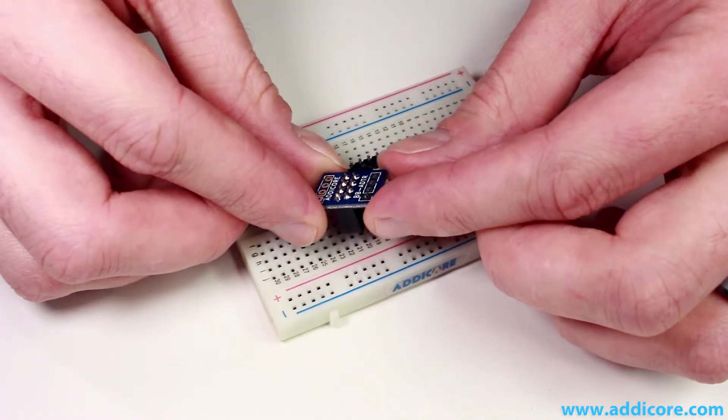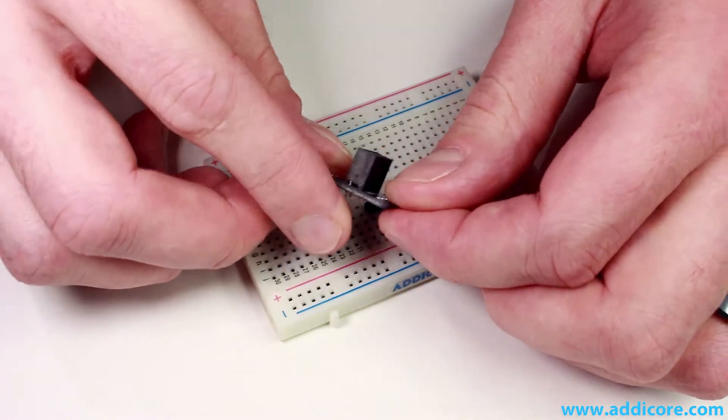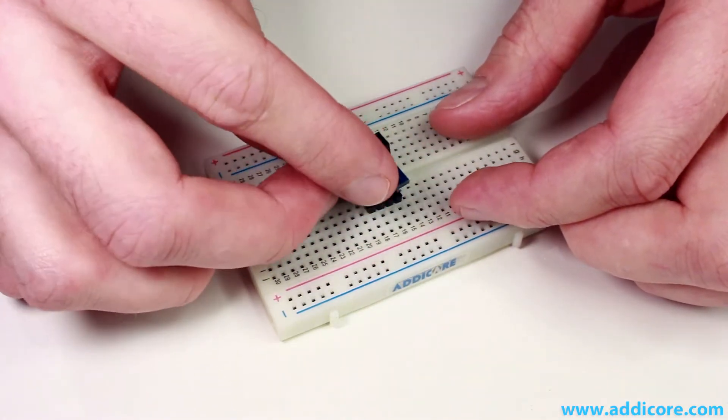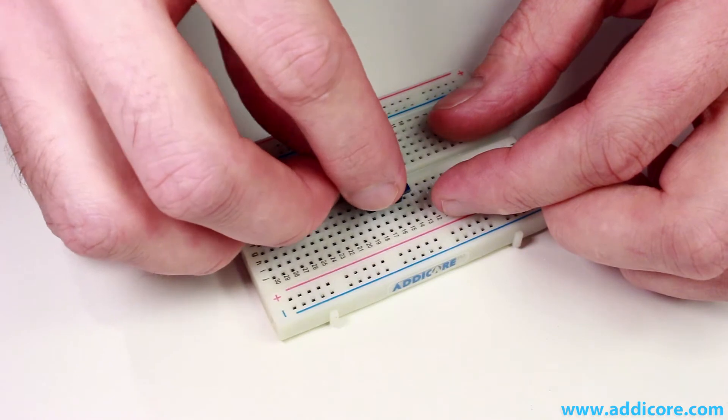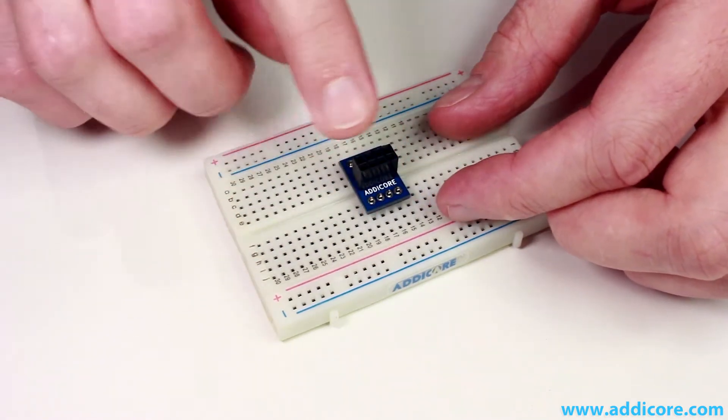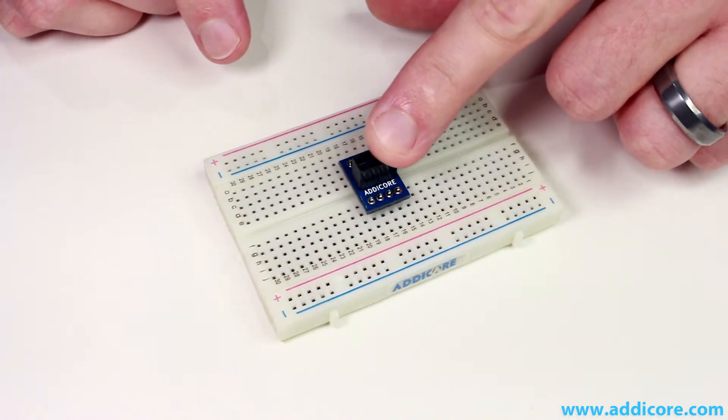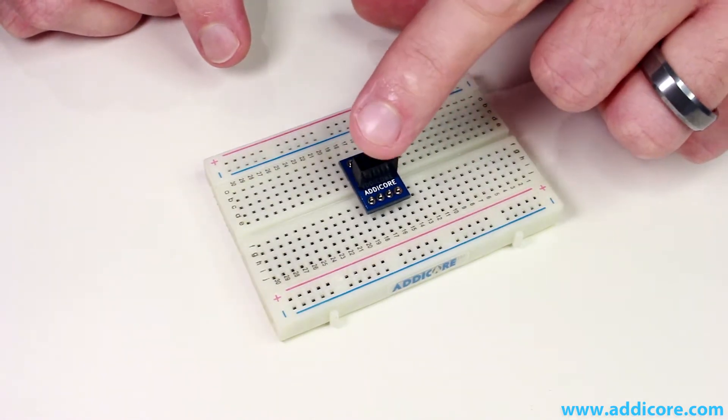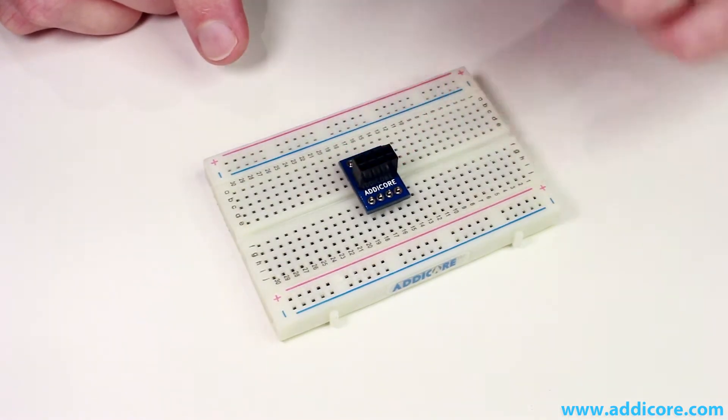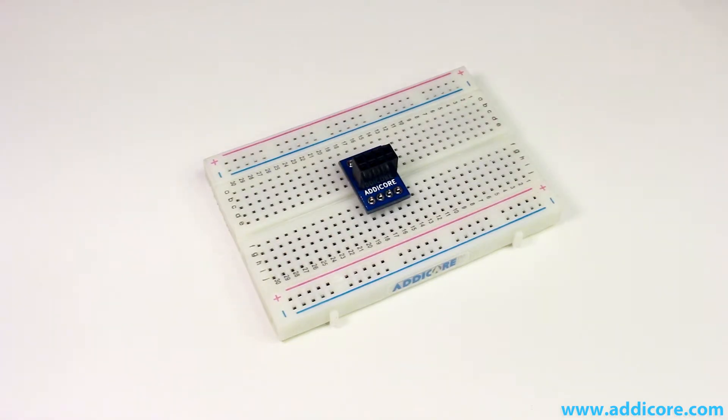So now that we have this part of the module assembled, let's take this adapter module and line it up with the header pins we have placed on the breadboard until they've come through. And then make sure it's nice and flat, that it's not at an angle and that everything's resting nice and flat and square.